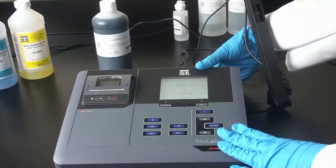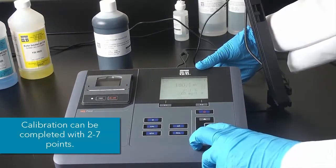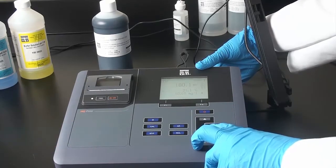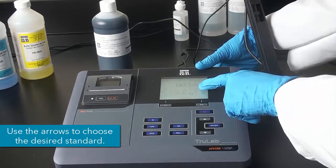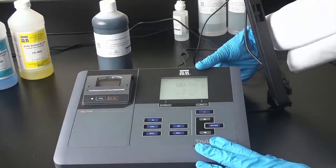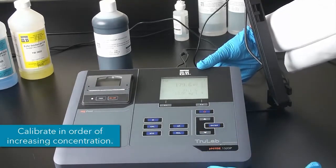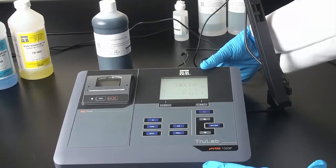So the TruLab can accept up to 7 calibration points, but for this I am just going to do 2. So what we will do is we will select our 10 mg per liter standard, and you can see this is the temperature reading from the pH electrode that we have. So at this point we are ready to start calibrating, and with that I will show you how to prepare your samples using ISA buffer.